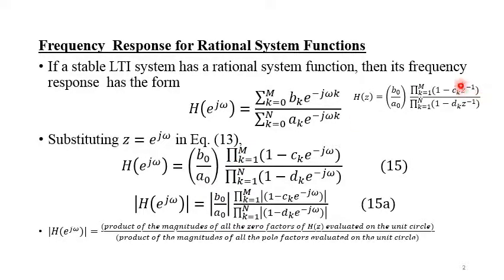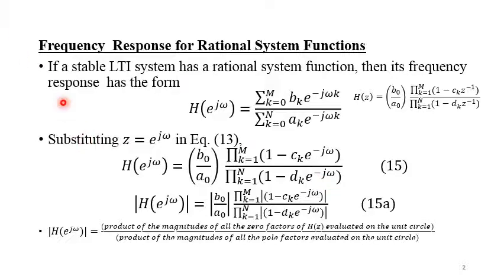Using the same expression, if we replace z by e^(jω), we can obtain the frequency response in factored form. Since z inverse is e^(−jω), the numerator factors become 1 minus c_k·e^(−jω), and similarly for the denominator we have the product for k running from 1 up to N of 1 minus d_k·e^(−jω).